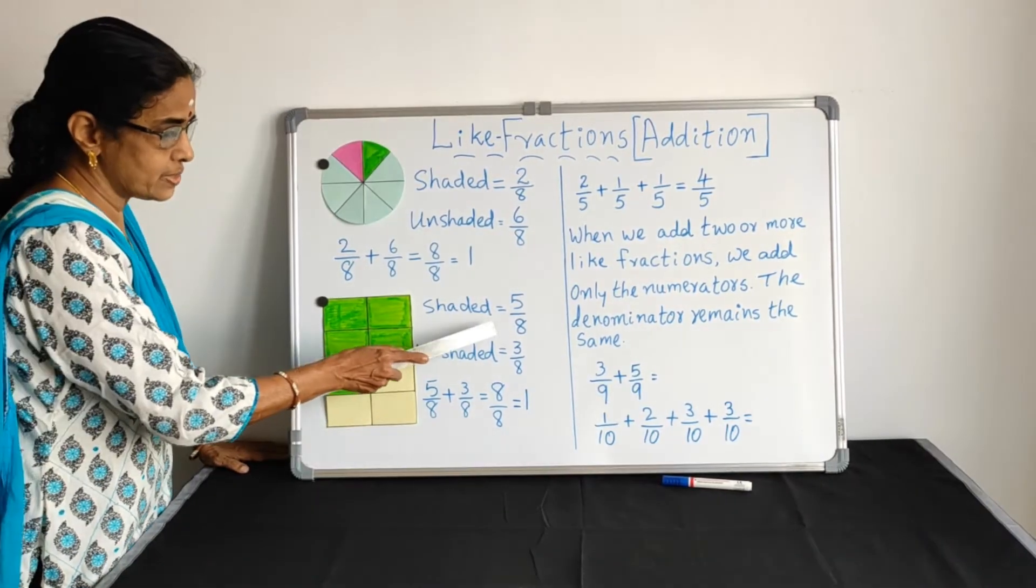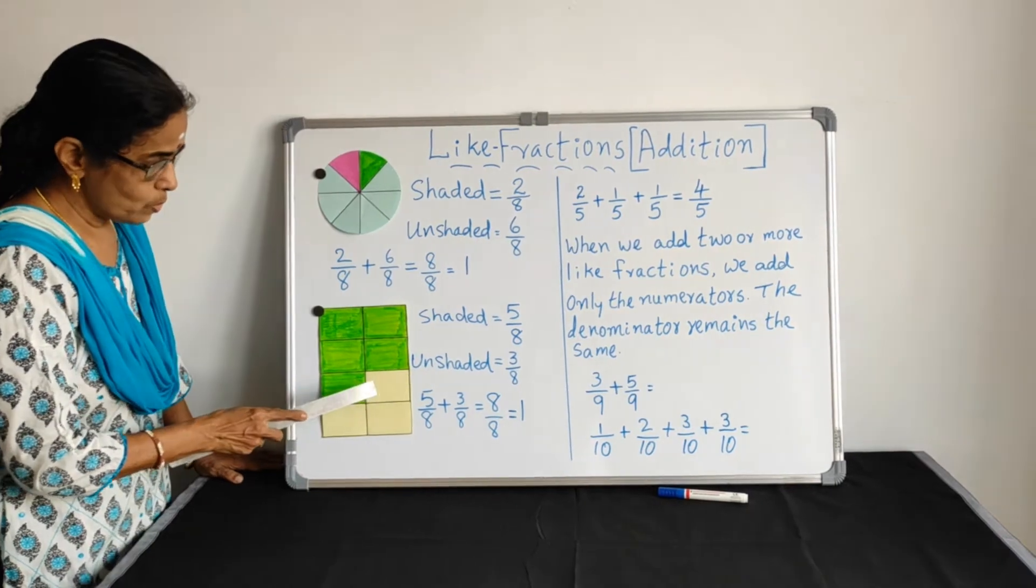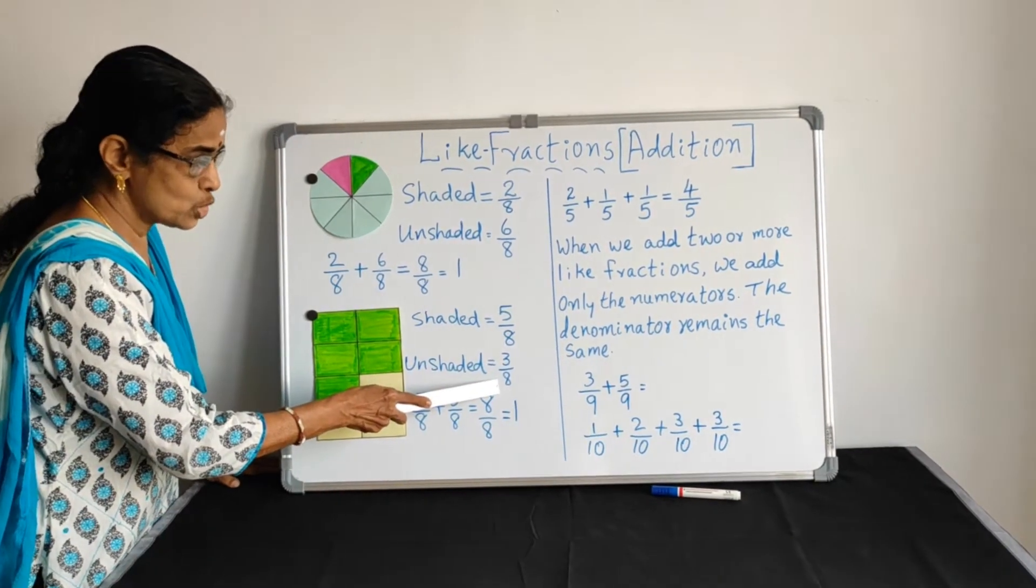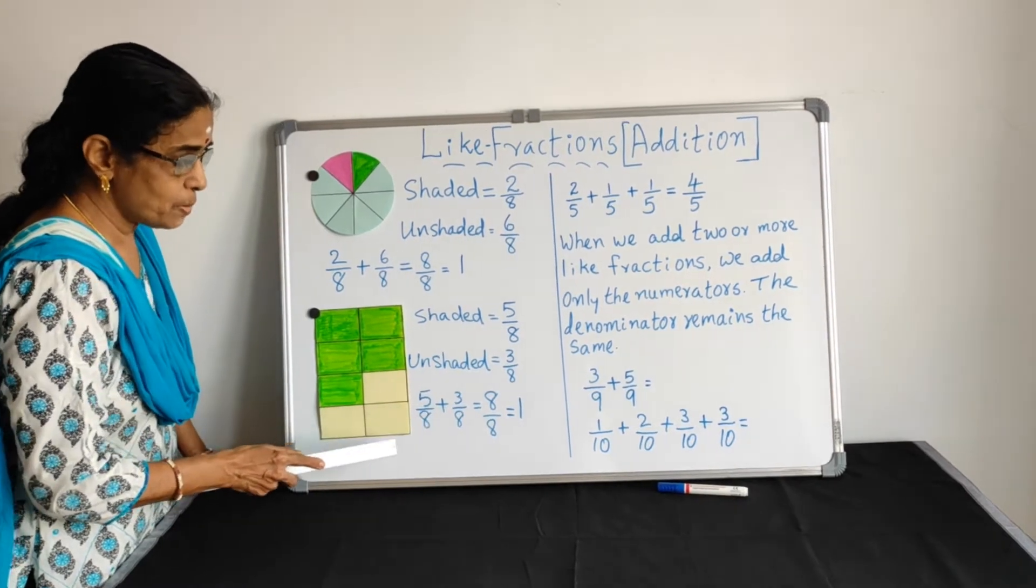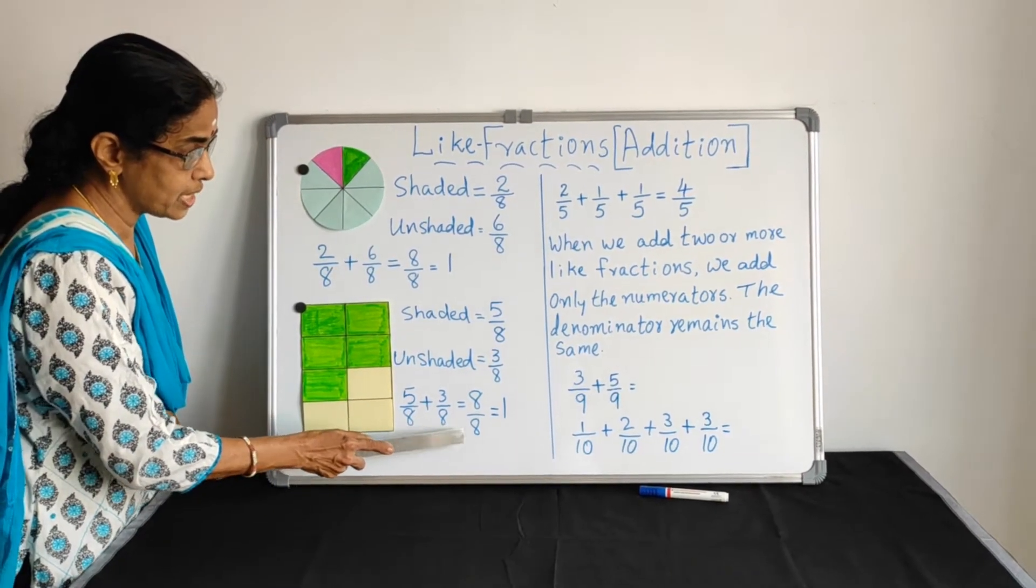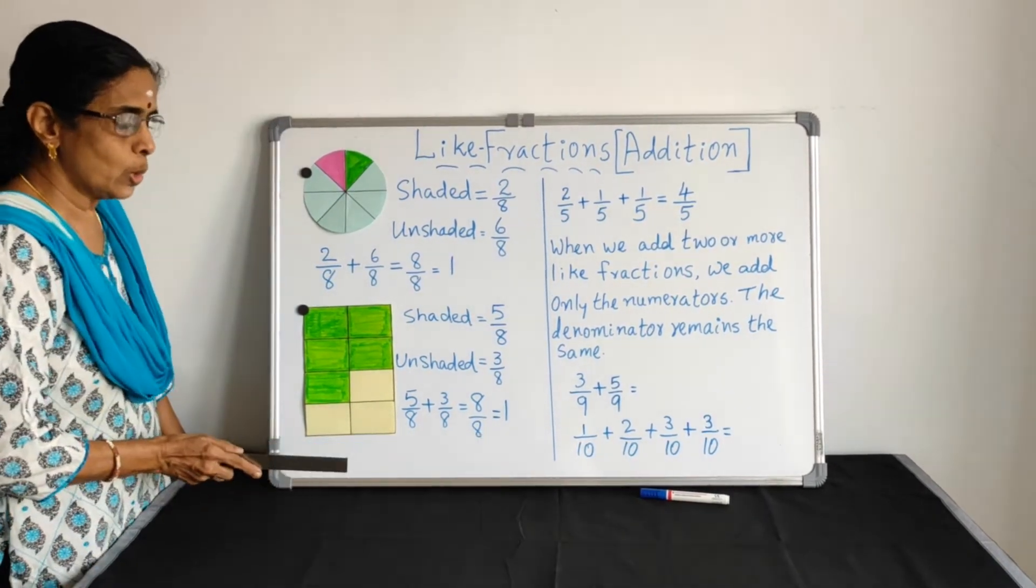1, 2, 3, 4, 5. 5 by 8. It represents 5 by 8. Unshaded 1, 2, 3. 3 by 8. Together, shaded plus unshaded, we are getting 5 by 8 plus 3 by 8, which is equal to 8 by 8. 8 by 8 means 1 whole.